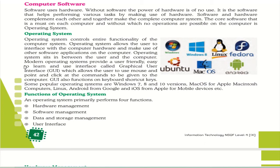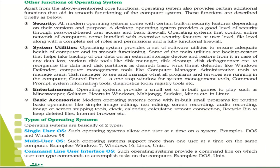There are various functions of the operating system: hardware management, software management — all software are managed through the operating system, and without it no game or application can run — and data and storage management. The user interface can be of various types like GUI. There are many other functions as well: security — modern operating systems come with built-in security features like password-based user access or a basic firewall — and system utilities, which are a set of software tools to ensure adequate health and smooth functioning of the computer, including backup and restore.